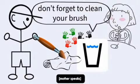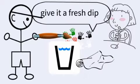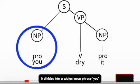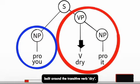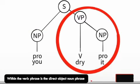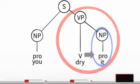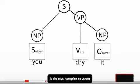You dry it. "You dry it" is a sentence. It divides into a subject noun phrase, "you," and a verb phrase built around the transitive verb "dry." Within the verb phrase is the direct object noun phrase represented by the pronoun "it." As an SVO sentence, "you dry it" is the most complex structure of these four utterances.